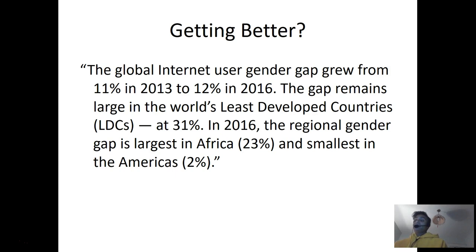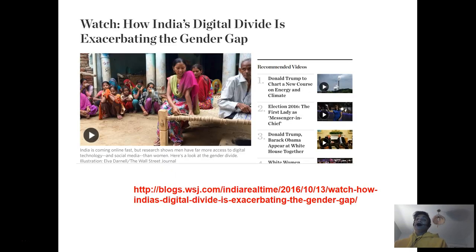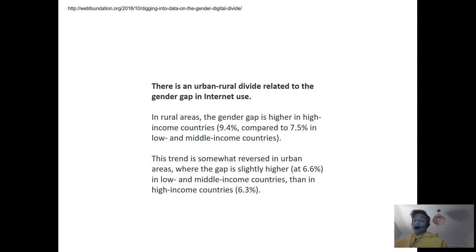In the Americas, men and women use the internet at similar rates — the smallest gender gap. In sub-Saharan Africa they do not. Some argue that India's digital divide is making the gender gap worse, because men are using it more, getting better educated, better access to information, and possibly better job opportunities. There's also intersectionality between gender, income, and the urban-rural divide. The lesson is that there are different stories in different parts of the world — no single global narrative, just regional variation.